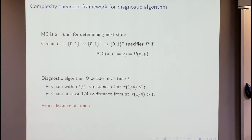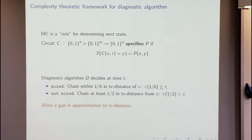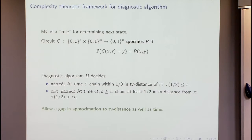One thing to note is that you're asking something stringent — to tell exactly what the distance is at time t. You could relax this: you could say just give an algorithm that at time t, if the variation distance is below one-eighth, say 'mixed'; if it's still at least one-half, say 'not mixed'; and in other cases you're allowed to make a mistake, allowing some gap in your approximation. You could go further and say 'mixed' if below one-eighth at time t, but 'not mixed' if after running for c times t you're still half away from stationarity.